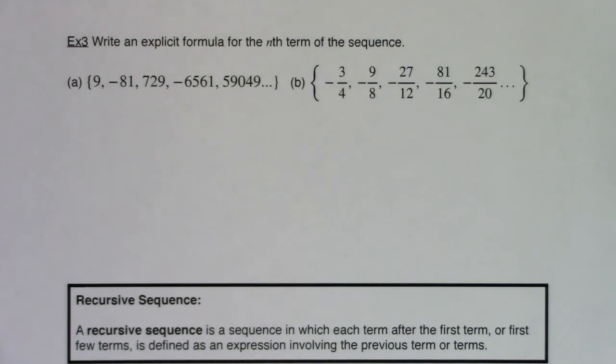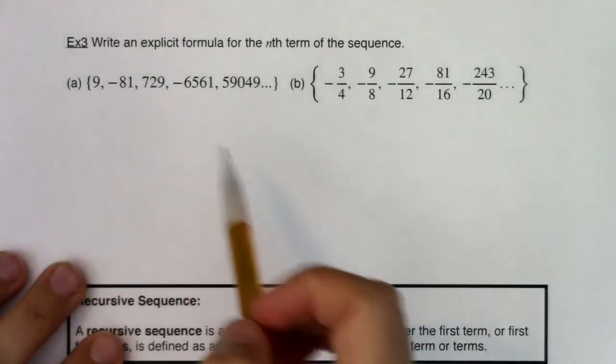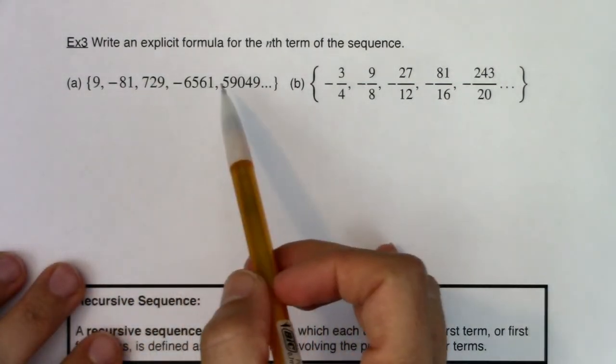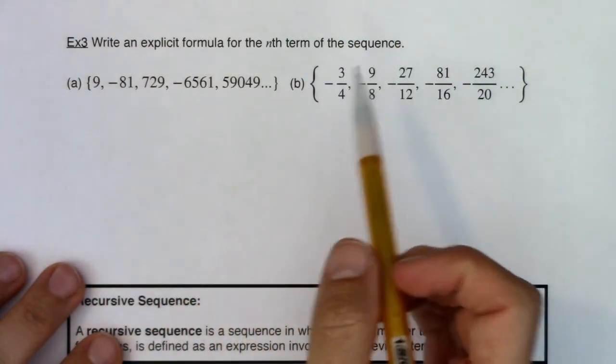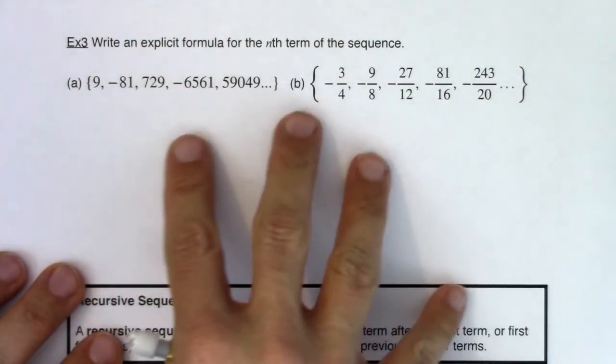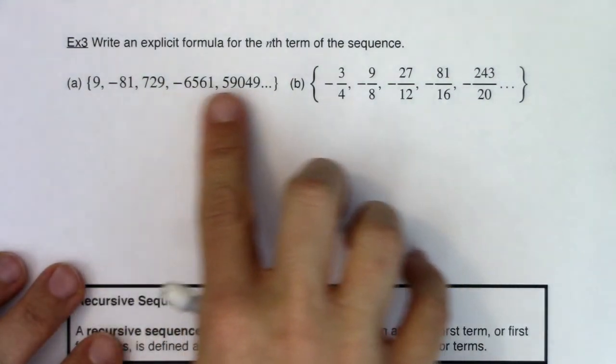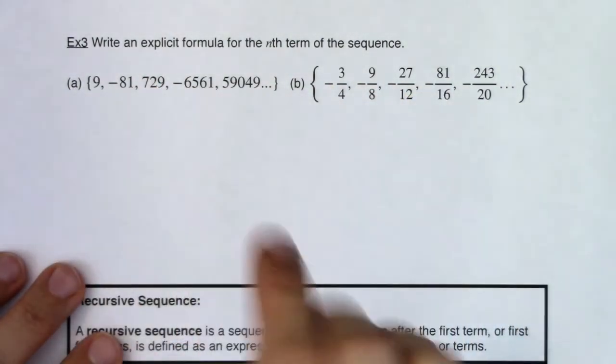Hey MAT31, welcome to example 3. So in example 3 we're going to go backwards, and when I say we're going backwards, this is when I'm just going to flat out give you the terms in the sequence and ask you to write the explicit formula for the nth term. We're going to do parts A and B.